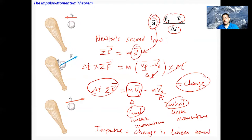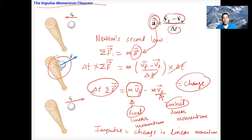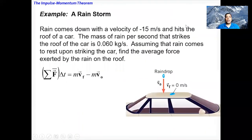This relationship — impulse equals change in linear momentum — is called the impulse-momentum theorem. It applies especially when Δt is small, as in the baseball-bat collision case.